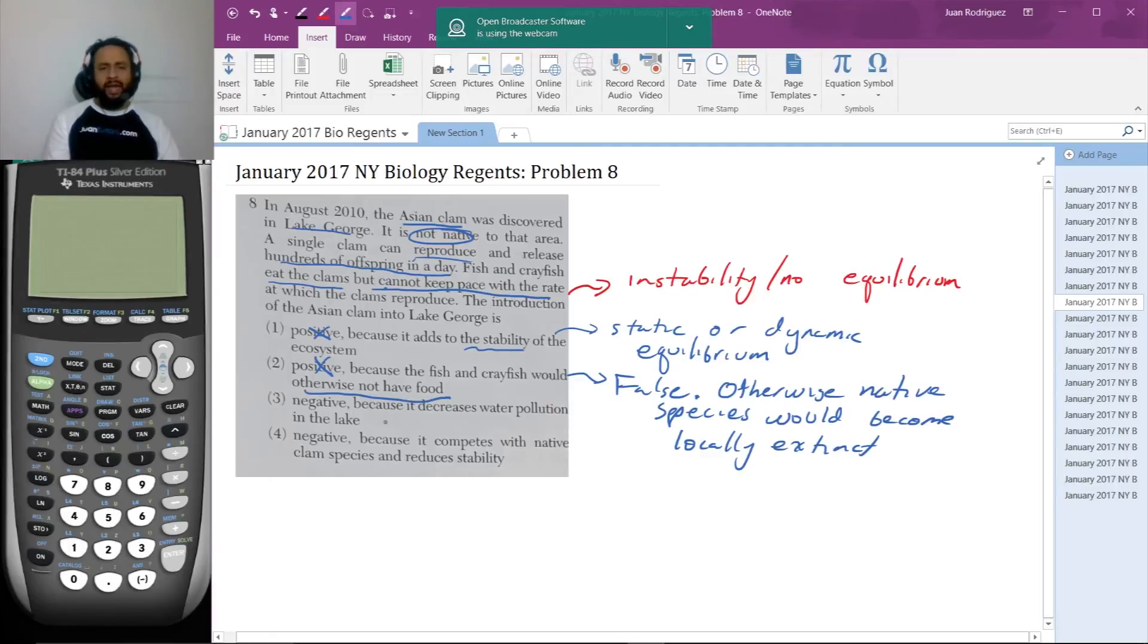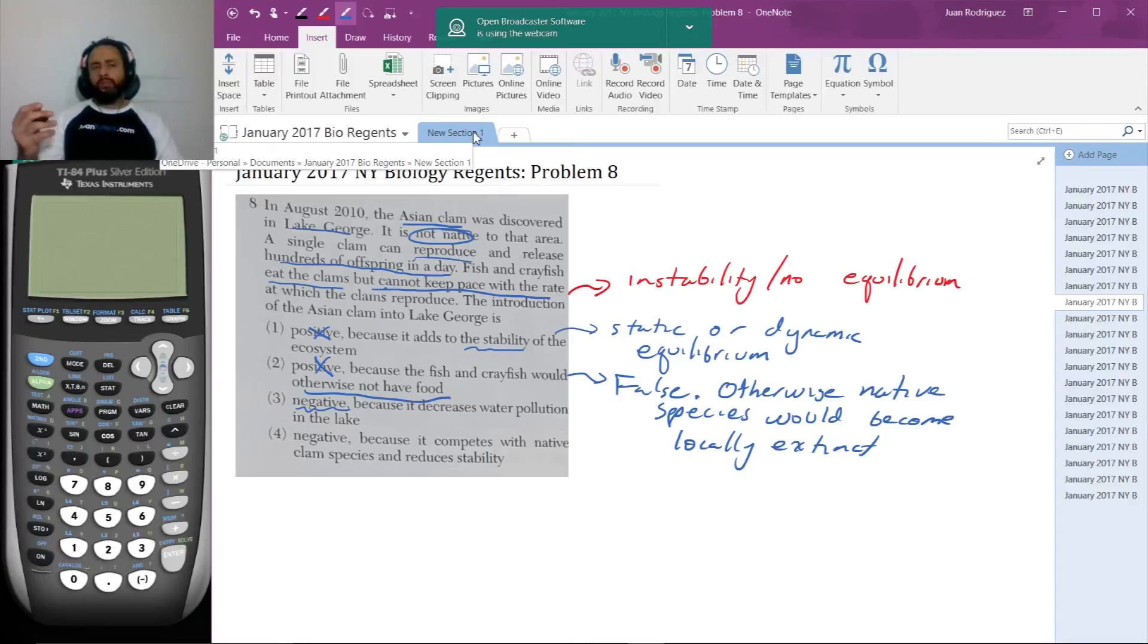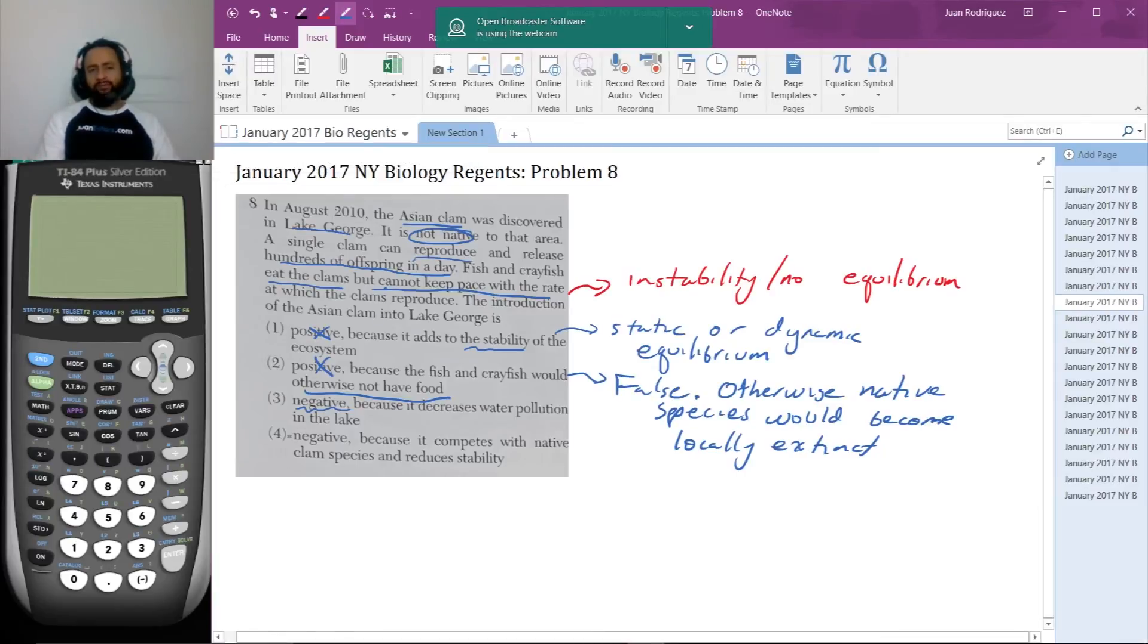The next one, negative makes more sense. This is good. Because it decreases water pollution in the lake. Now, I don't see anything here that implies that water pollution is decreased. Second, I can't think of a single reason why decreasing water pollution would be a bad thing. So that's definitely, the answer is nonsensical to begin with. And second, it actually implies something that's not contained in the problem. So that's not the answer.